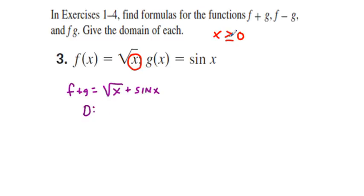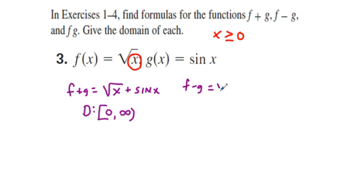The domain is x greater than or equal to 0, so in interval notation the lowest possible value is 0, all the way up to infinity: [0, ∞). Then f minus g equals square root of x minus sine x, and its domain is again 0 to infinity.